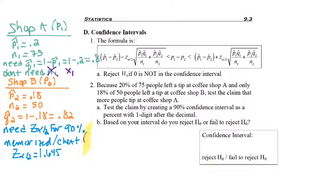Starting off our confidence interval, we start with p-hat 1, which was 0.2. Then we're going to subtract p-hat 2, which was 0.18.